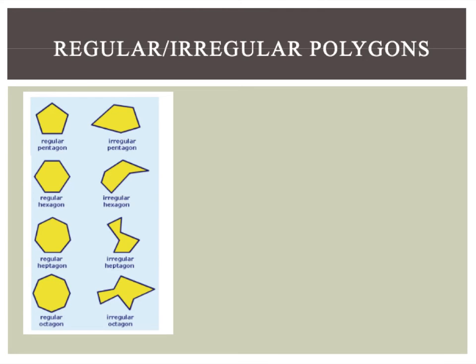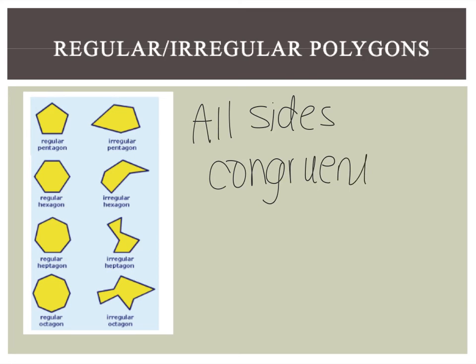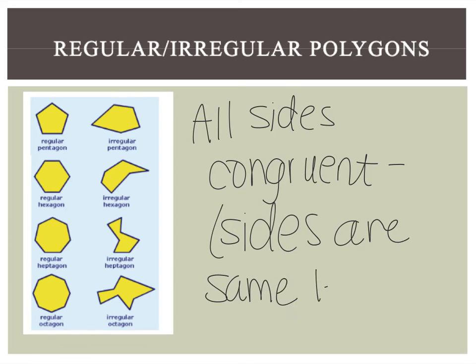Alright, so let's look at the difference between a regular and an irregular polygon. Remember, we said that a regular polygon has all sides congruent. Now, congruent just means that all of the sides are the same length. So, looking at all these shapes that I have here, I can tell that all of these shapes are regular because all of the sides have the same length. And these shapes, some of the sides are long, some of the sides are short, some are long, some are short. It's a very irregular shape, so you can very easily tell that these are regular and irregular.